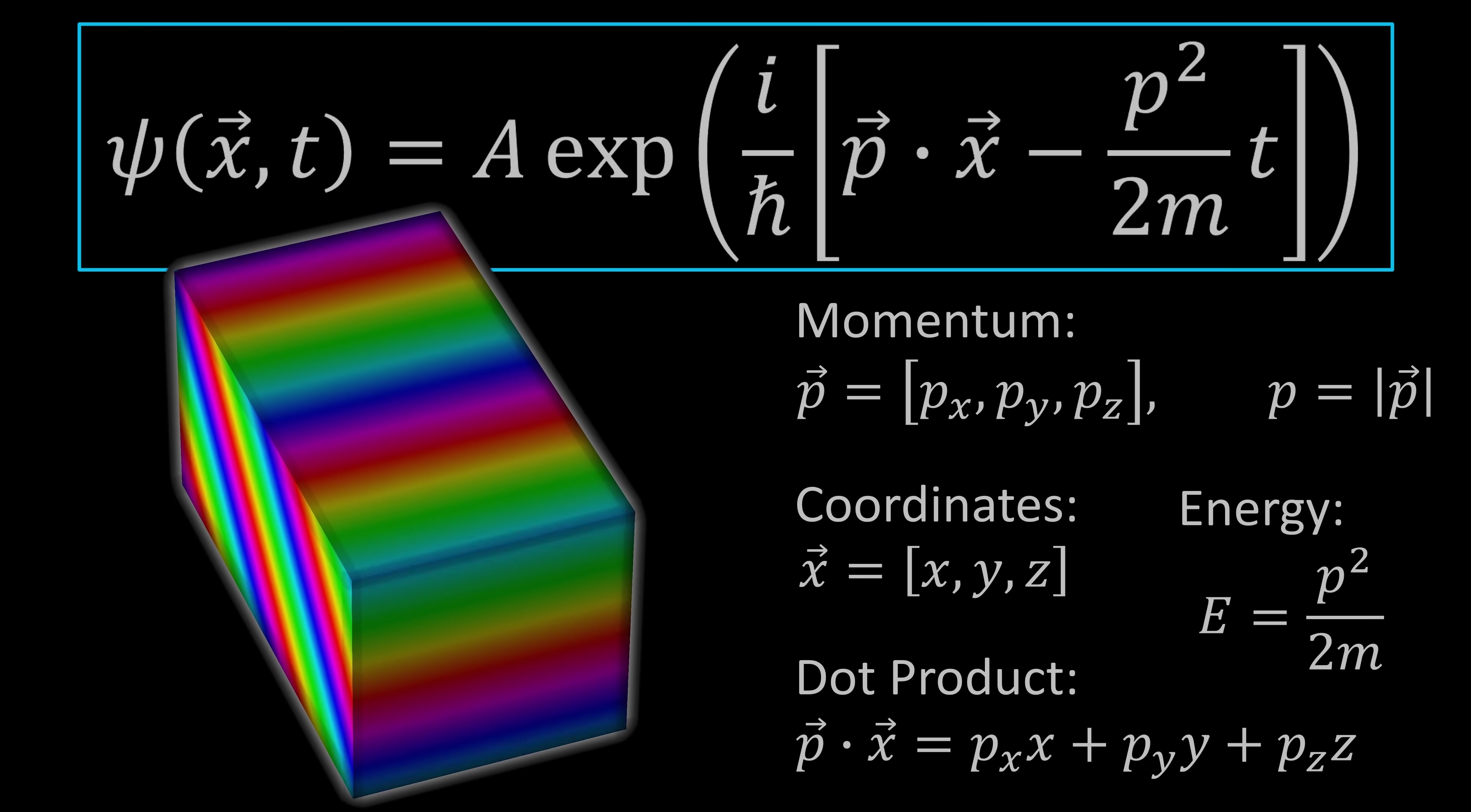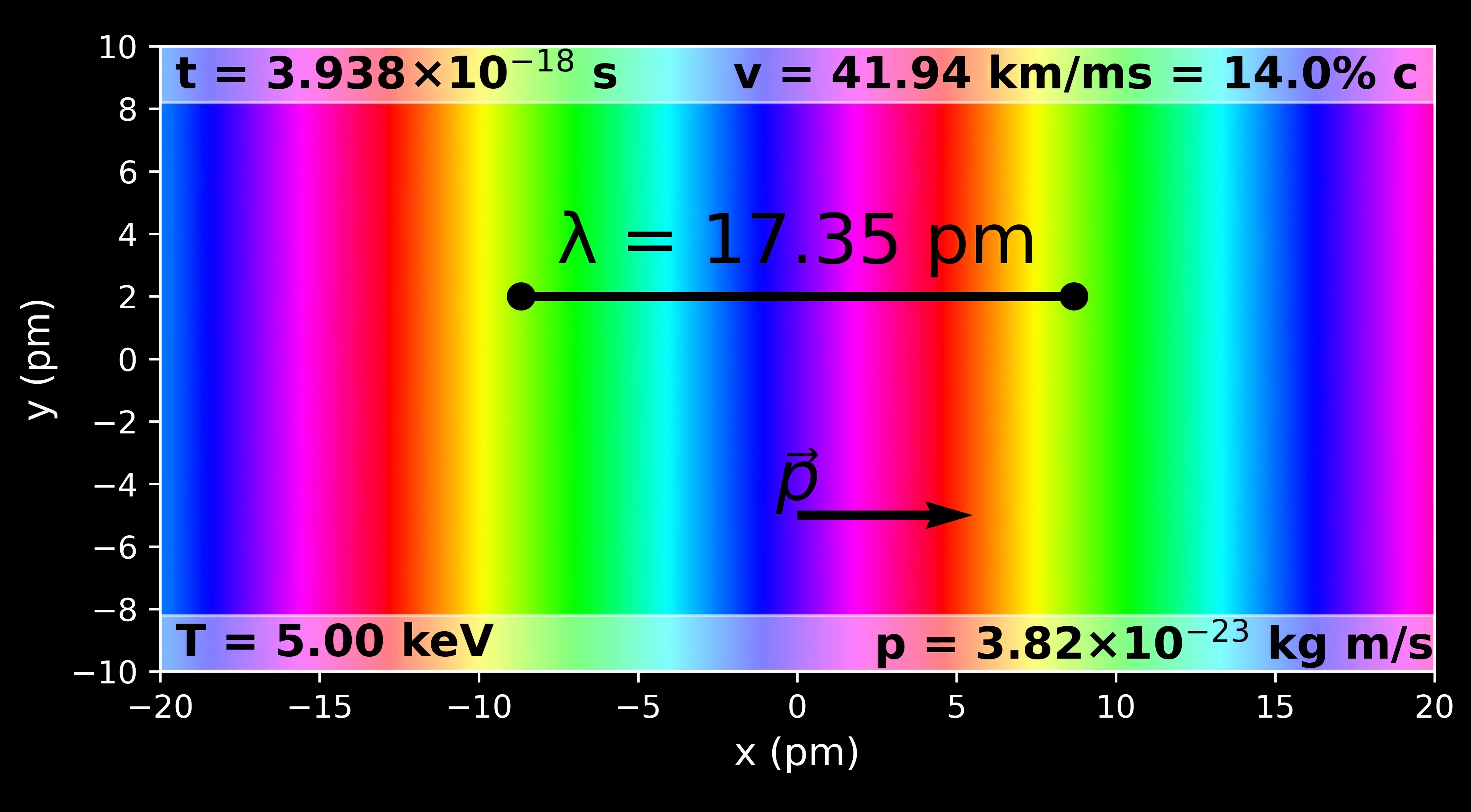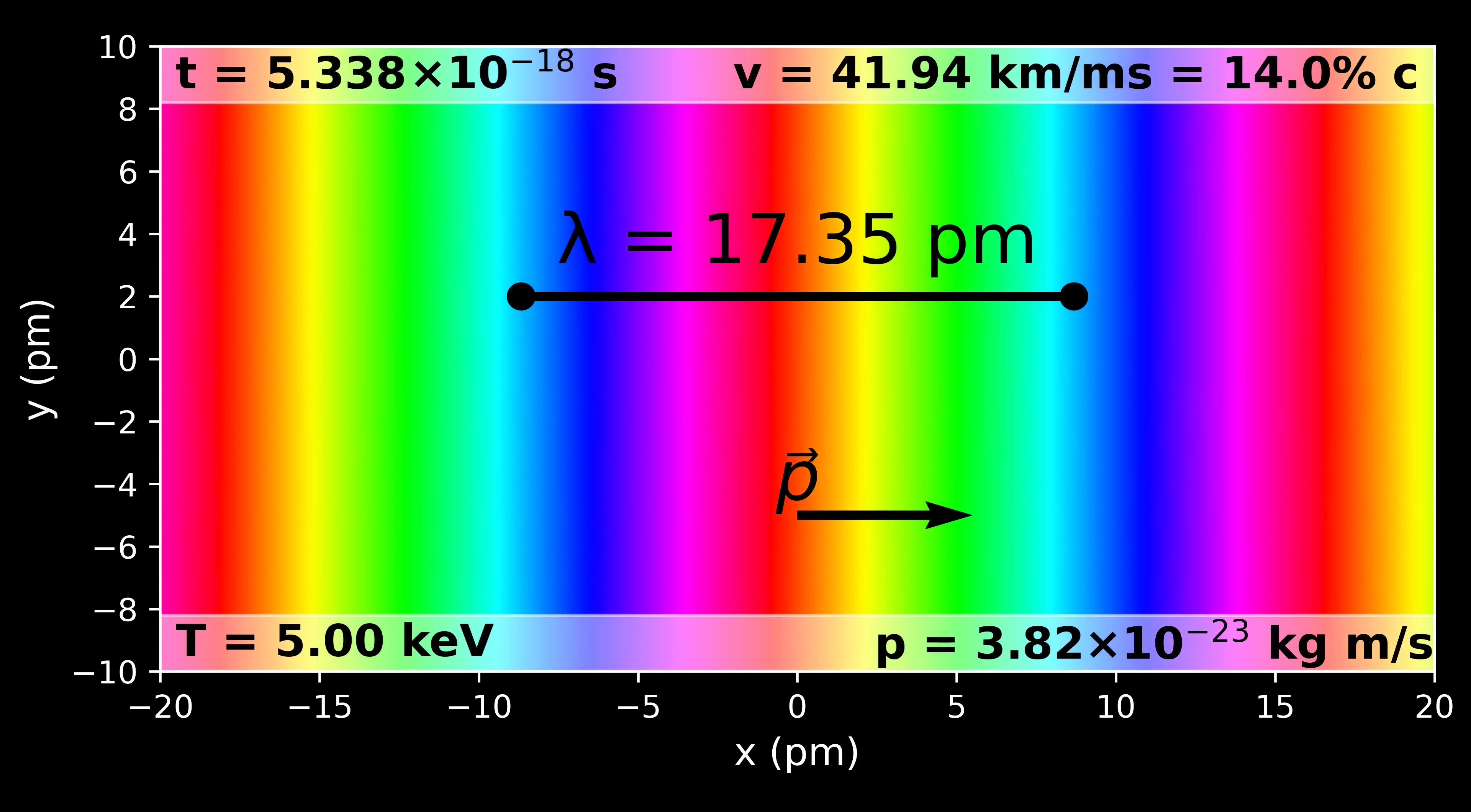You can think of that in two ways. First, it's an idealization—in reality you never perfectly know the momentum. But also you can think about these plane waves like we're pretty zoomed in on the particle. Let's say you have some experiment firing electrons with some momentum that's pretty well known. You're zoomed in on the region of interest where the electron beam is pointing—at that point you might as well model it as plane waves.